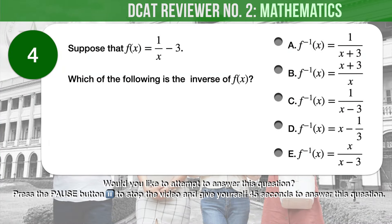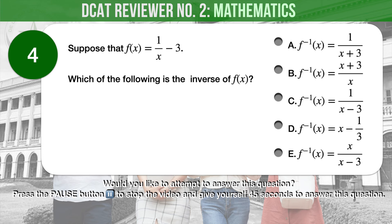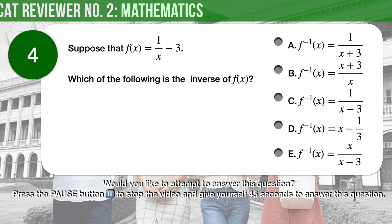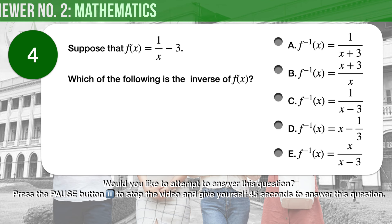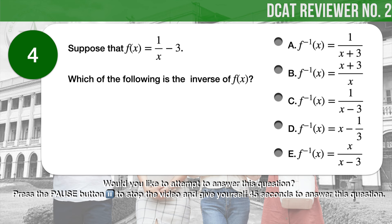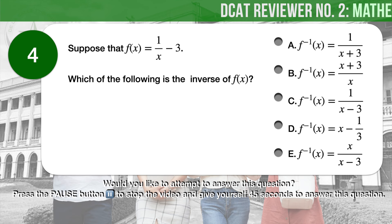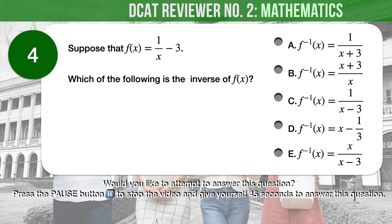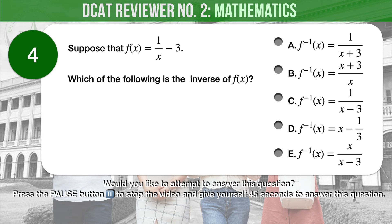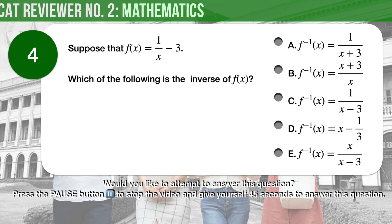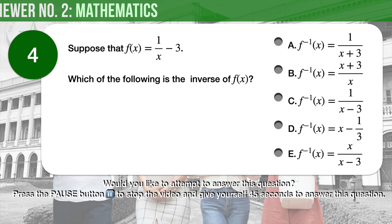Question number 4. Suppose that f(x) equals 1 over x minus 3. Which of the following is the inverse of f(x)? A. Inverse f(x) equals 1 over the quantity x plus 3. B. Inverse f(x) equals the quantity x plus 3, all over x. C. Inverse f(x) equals 1 over the quantity x minus 3. D. Inverse f(x) equals x minus 1 third. E. Inverse f(x) equals x over the quantity x minus 3.